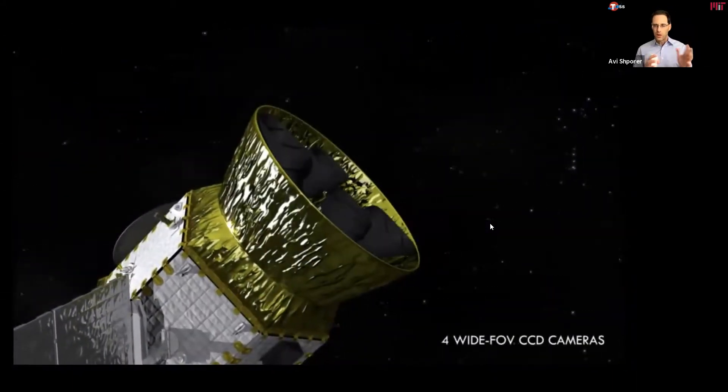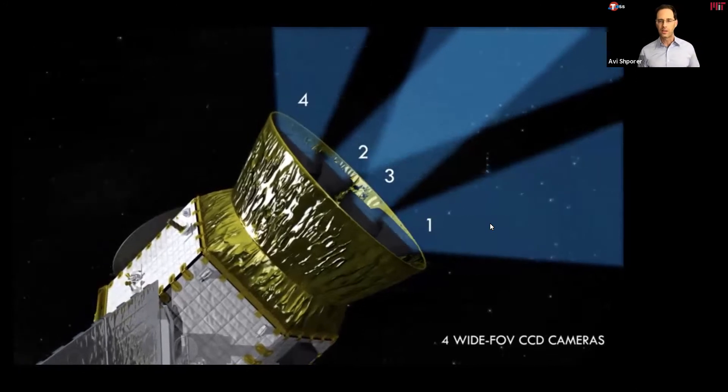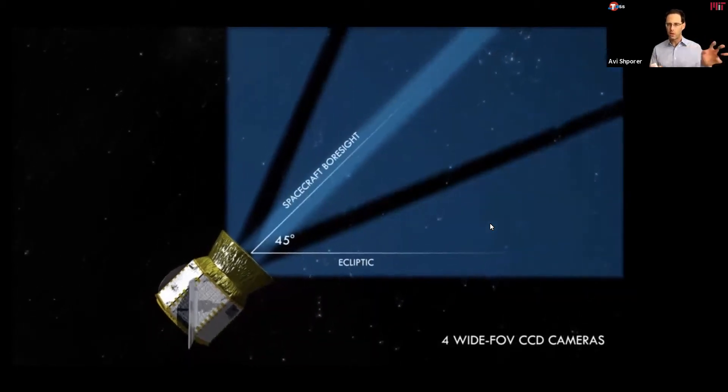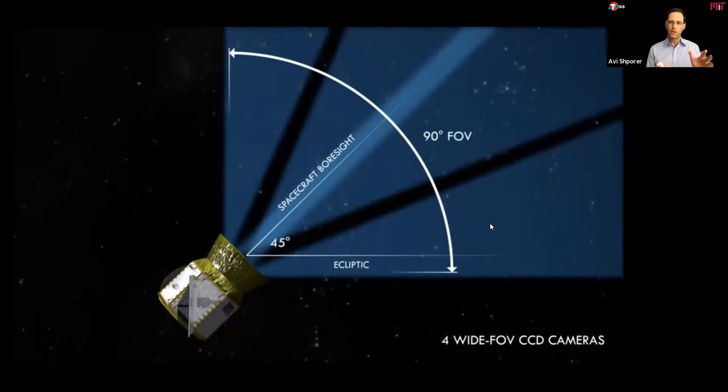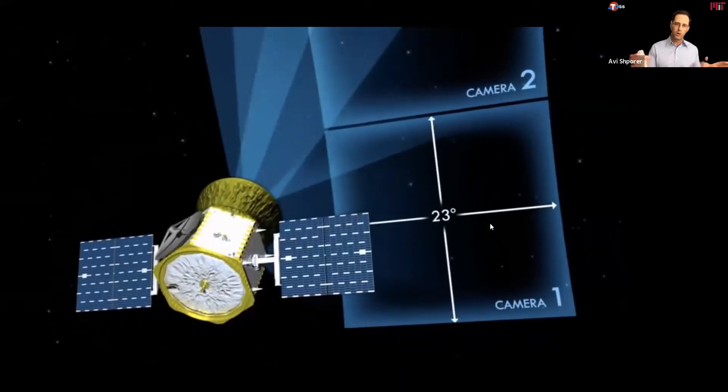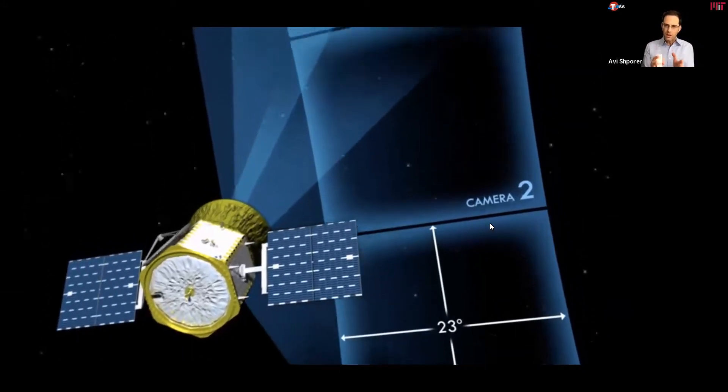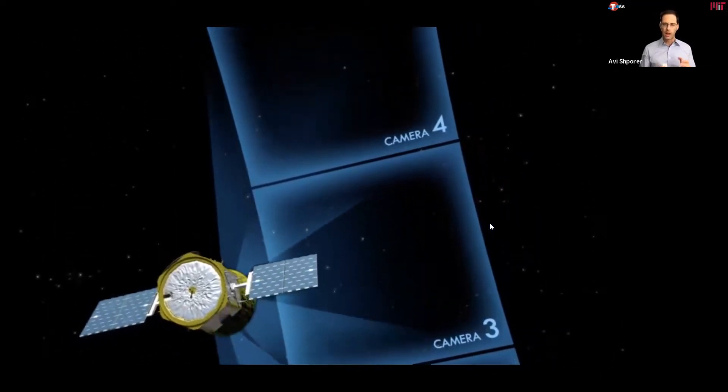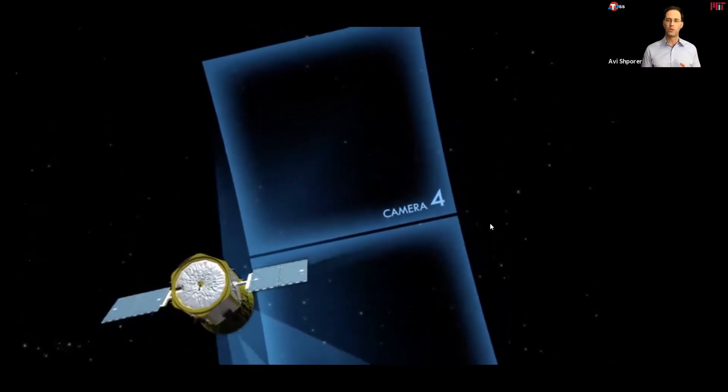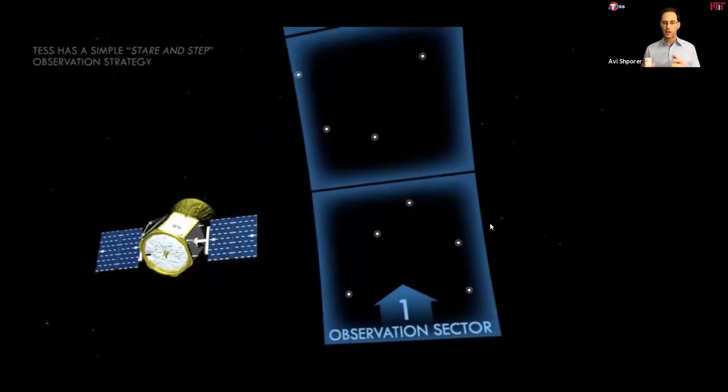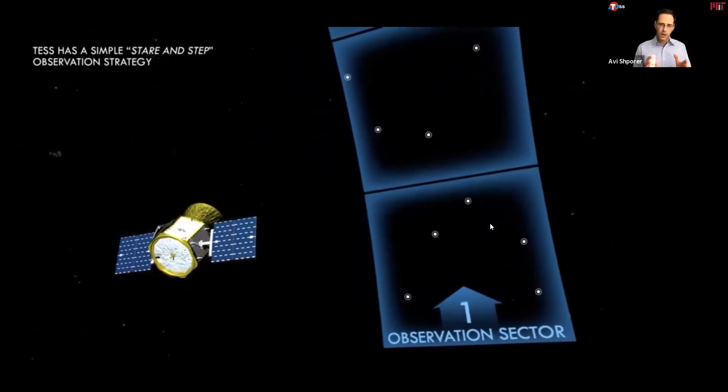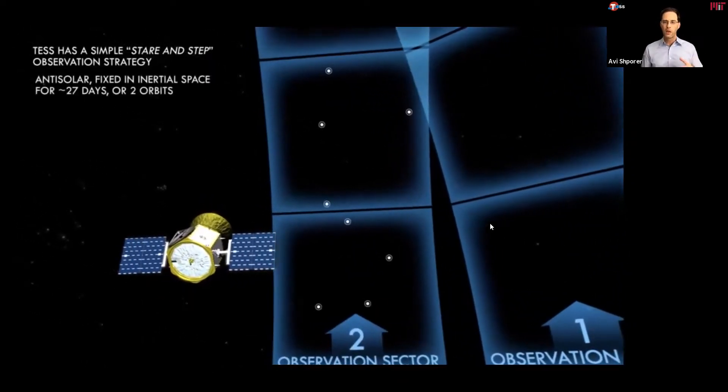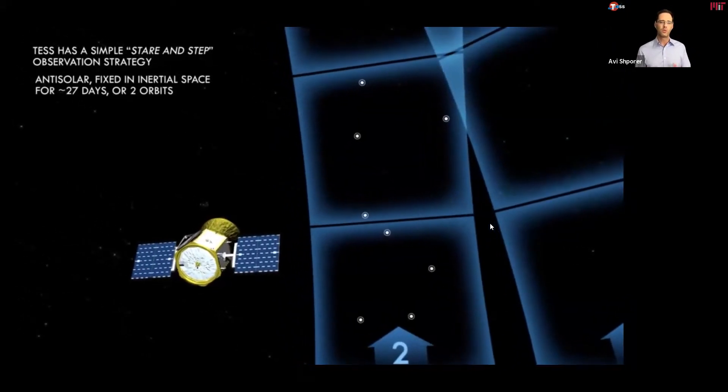Here is the pointing strategy, how TESS is covering the entire sky. There are four cameras on board. And the field of view of each camera is adjacent to the other cameras. So together, they form one field of view, which is 90 degrees long and 23 degrees wide. And this single pointing of the satellite is what we call a sector or a TESS sector. And you observe the sector or one sector for 27 days continuously. Then after 27 days, the satellite moves a little bit and moves on to the next sector. Again, 27 days and then moving on to the next sector and so on.